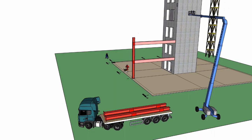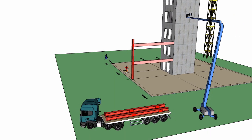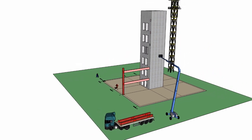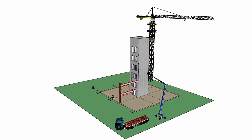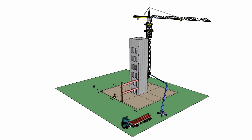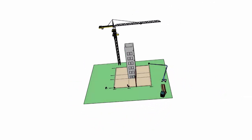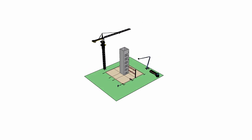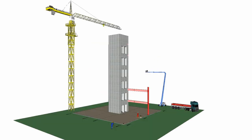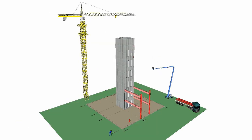The outline erection sequence: erect the columns, install the beams, align and plumb the structure, tighten the connection bolts, grout the column base plates, install floor decking and pour concrete slabs.